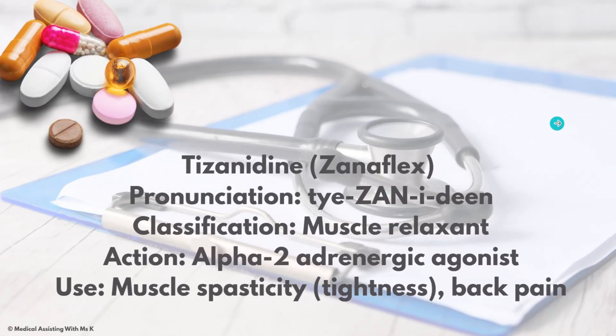Zanaflex — the generic is tizanidine. Classification: muscle relaxant. Action: alpha-2 adrenergic agonist. Use: muscle spasticity, muscle tightness, and back pain.